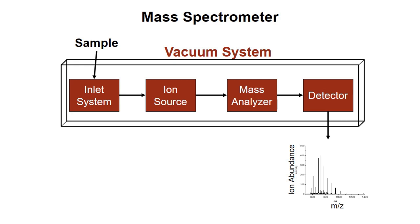A convenient way to discuss how a mass spectrometer works is to consider its main components, which can be seen on this slide. We need some way to introduce the sample into the mass spectrometer. Oftentimes, this inlet system is a gas chromatography system or a liquid chromatography system. Once the analytes are introduced, they need to be ionized in an ion source, and then the resulting ions can be mass analyzed by a mass analyzer on their way to being detected. The resulting mass spectrum is a plot of ion abundance versus mass-to-charge ratio. Because ions can be very highly reactive and mass analyzers work best when ions do not undergo collisions with gas molecules, mass analysis is best done in a vacuum system.